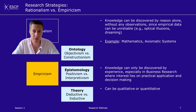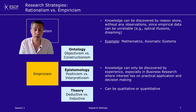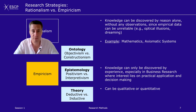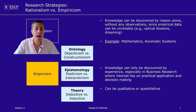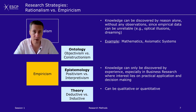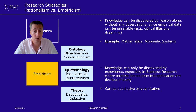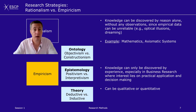Empiricism assumes exactly the opposite: knowledge can only be discovered by experience — by asking people, talking to people, or observing people and collecting data of some form. Why? Because business research has practical implications on decision makers, and in order to understand this, we need to look around us. There are two different ways of collecting data, which we talk more about in later sections: one is qualitative and one is quantitative. When we are in an empiricist view and want to collect data, we need different perspectives of how we think the world looks like, reflected in the concepts of ontology, epistemology, and theory.